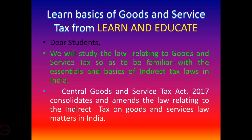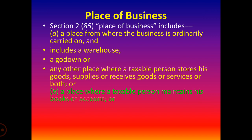Dear learners, welcome back to your educational channel Learn and Educate, where we were studying a few basics about the Goods and Service Tax from the Central Goods and Service Tax Act 2017. Now, Section 2, Clause 85 — Place of Business. It is an inclusive definition. Place of business includes a place where the business is normally carried on and from where he supplies goods or services or both to the recipient.